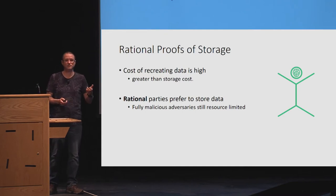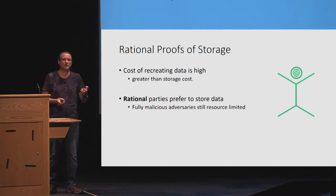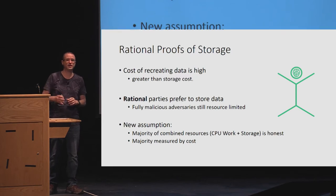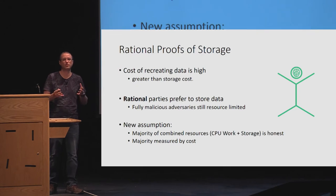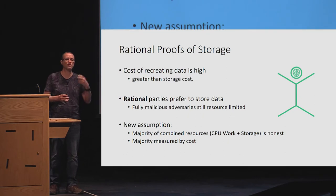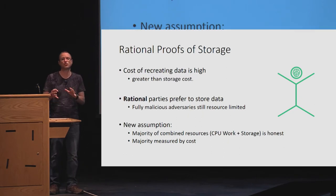It's still okay in terms of security even if the adversary is not rational, because the cost of the adversary is still going to be high no matter which strategy they choose. So our new assumption, instead of an honest majority of disk space or an honest majority of CPU, is an honest majority of combined resources — some trade-off factor of however much storage costs, however much CPU costs — and we're talking about the majority in terms of cost.